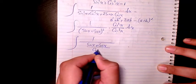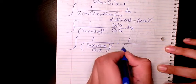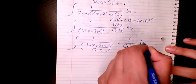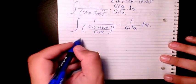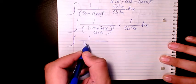Then to simplify it, sine divided by cosine is tan x, cosine divided by cosine is 1.